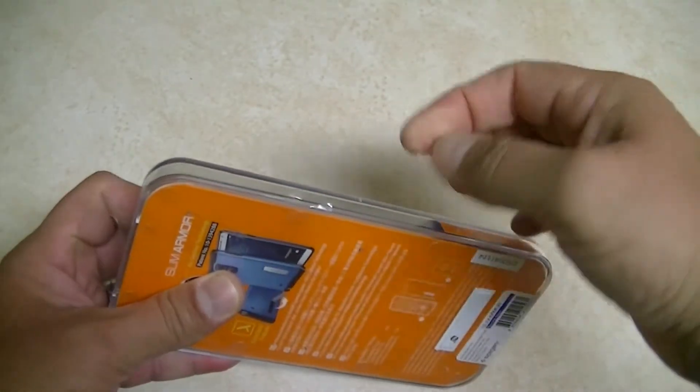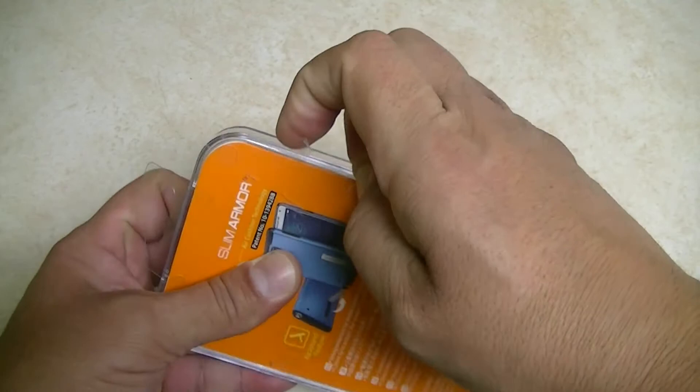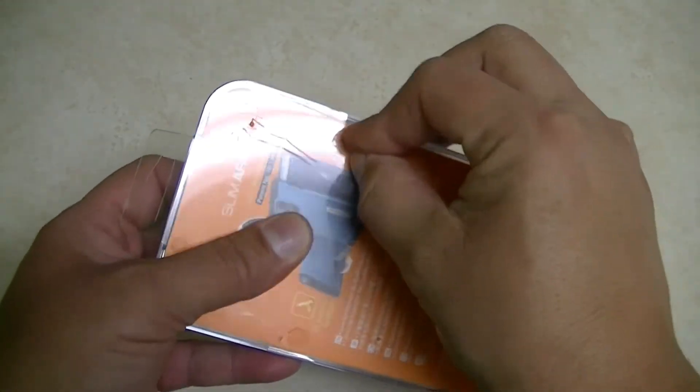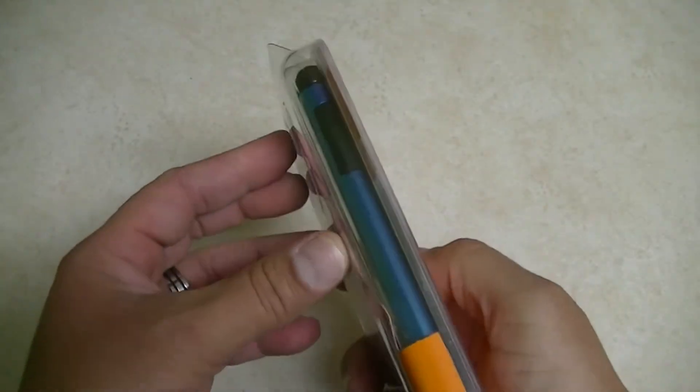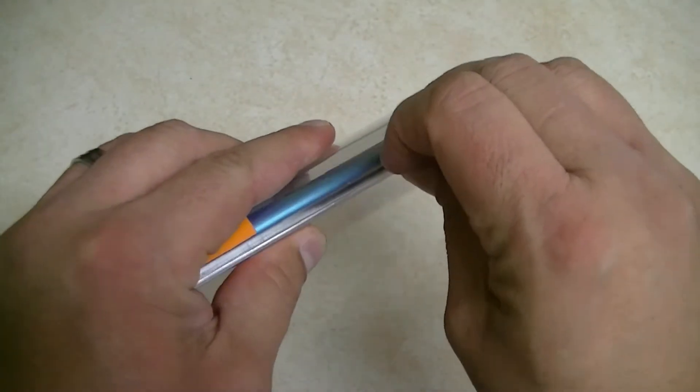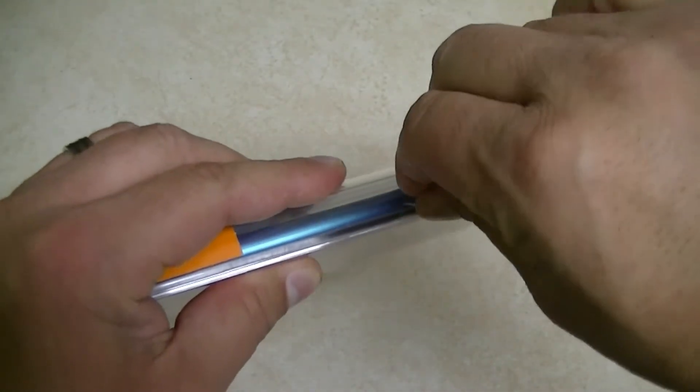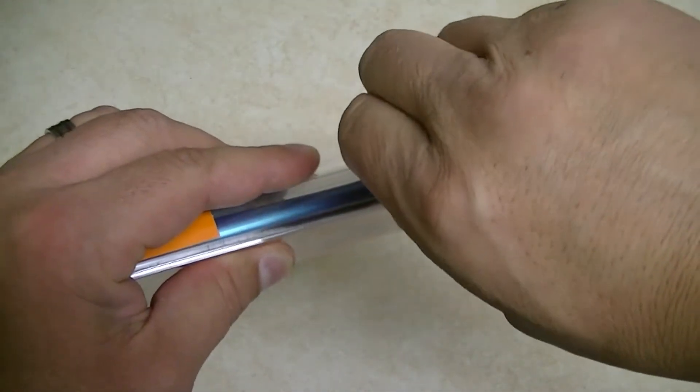In this case, there are two versions of the Spigen case for the Note 4. The Neo Hybrid and this model, the Slim Armor, that comes with the kickstand on the back, which is a really good advantage considering the size of the screen on the Note 4.